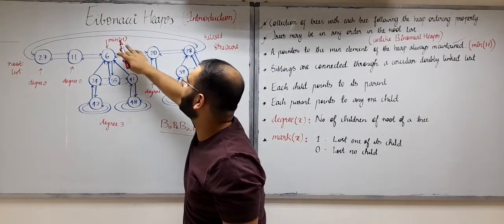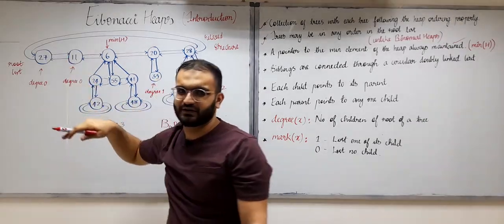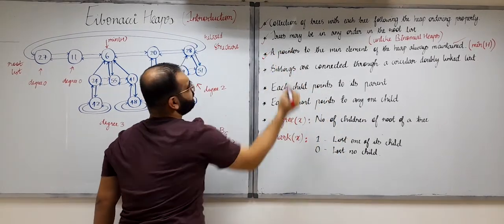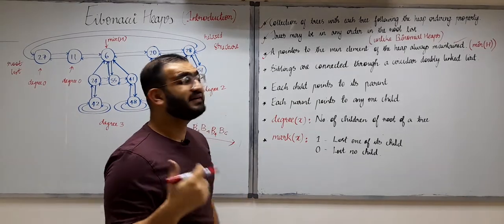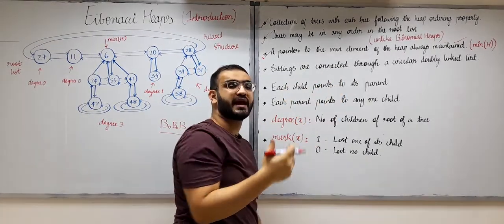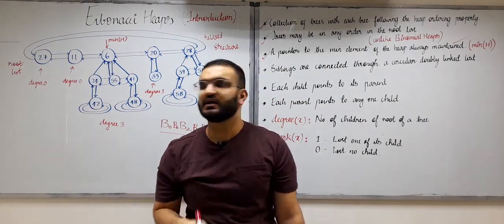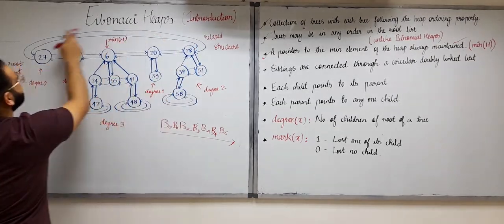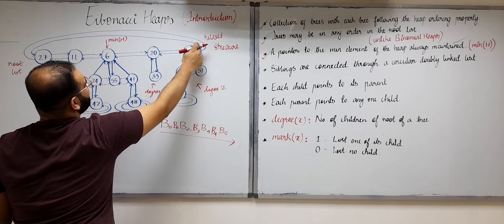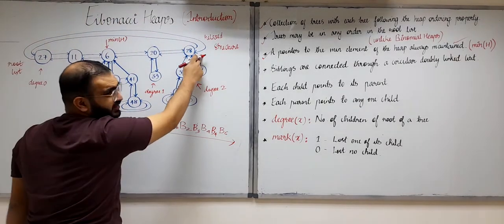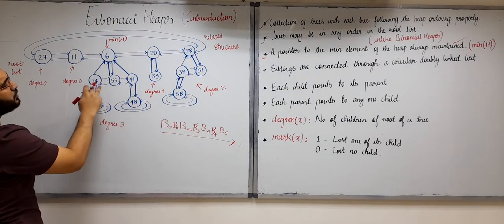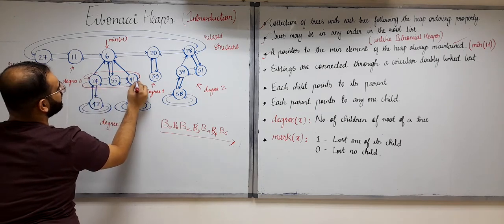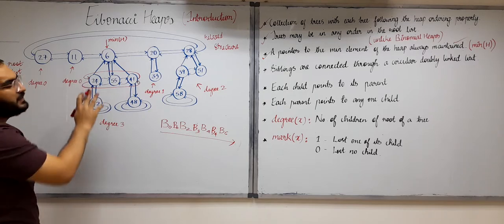So we will keep updating this pointer so that we can always find the minimum element in O(1) time. Another interesting thing in Fibonacci heaps is that siblings are connected via a circular doubly linked list. The linked list runs in both directions and the last node points back to the first node, and the first node points back to the last node — making it circular. This applies to all sibling groups in the heap.